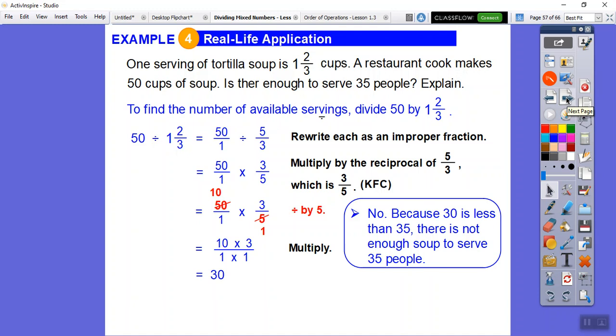I forgot to answer the question. 30 what? Well, it asks, can we serve 35 people? No, we can only serve 30 people. So because 30 is less than 35, there's not enough soup to serve those 35 people.